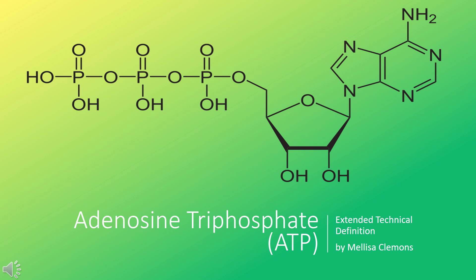Adenosine triphosphate, or ATP, is the main form of stored energy in cells. It is the currency of biological energy in every living thing. We're going to walk our way through what ATP is, where ATP is synthesized, how ATP is recycled in the body, where we get the starting materials, and what functions require the use of ATP.